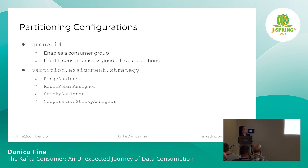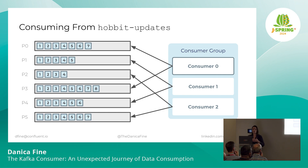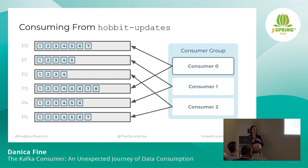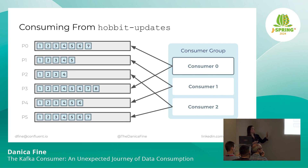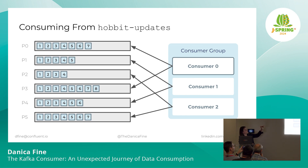We're going to assume that in our application we are joining a consumer group, and we are going to use round robin or the sticky partitioner. Our Hobbit updates topic has six partitions, and this particular consumer — consumer zero — is one of a handful of consumers in the group. Using the cooperative sticky partitioner, once we've reached a steady state, our partitions might be distributed like this: consumer zero receiving partition zero and partition three, and the other consumers receiving some combination of the others. So we are responsible for two partitions.